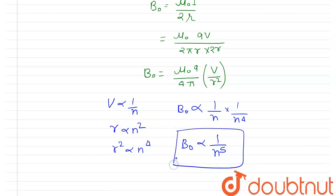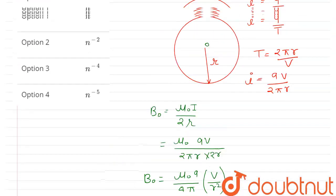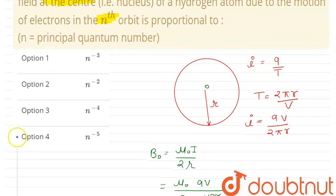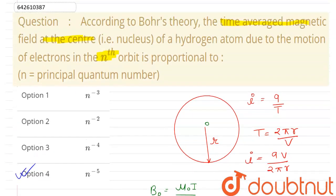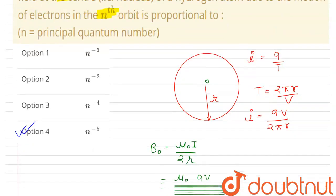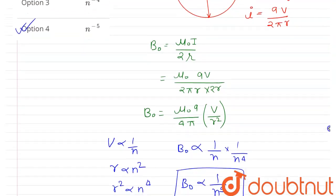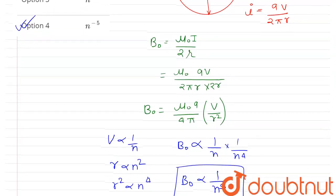So this will be the proportionality relation of the time-averaged magnetic field at the center with the principal quantum number n. Now you can see option 4 is the correct one. So this was our question, and we wanted the proportionality relation between time-averaged magnetic field at the center and principal quantum number, and we got that the magnetic field at the center is directly proportional to 1/n⁵.